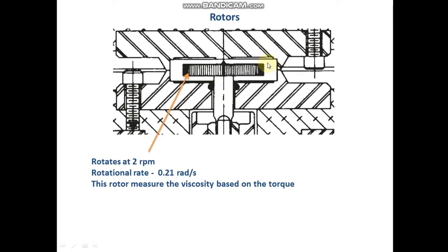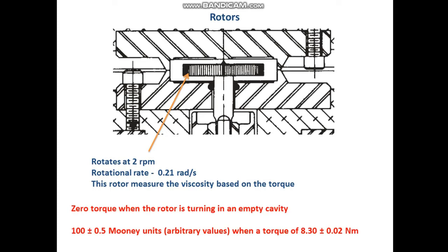We load our rubber sample to the cavity, then close the upper die, then apply a temperature of 100°C, and start the Mooney viscometer — meaning the rotor will start to rotate at 2 rpm. It tries to keep 2 rpm always throughout the test, and it will measure the Mooney viscosity and stress relaxation of the rubber sample. After measuring the Mooney viscosity, to measure the stress relaxation properties we need to stop the rotation of the rotor suddenly, then we can record the stress relaxation.